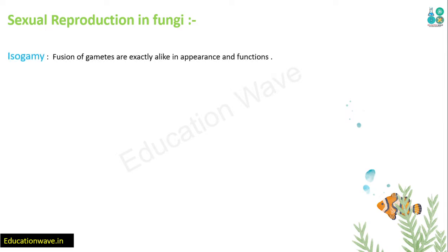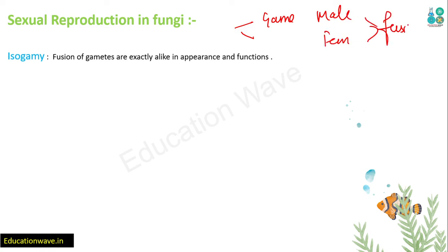First, let's look at the ways gametes fuse with each other. This is not given in our NCRT, but I still wanted to explain it. In sexual reproduction, male and female gametes are present - they fuse and form a zygote. But these male and female gametes fuse in three different ways.